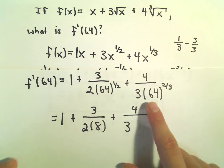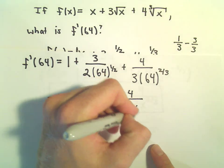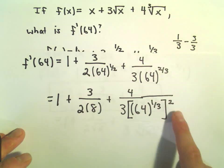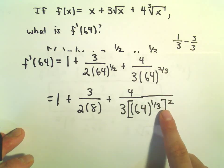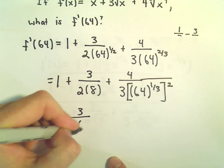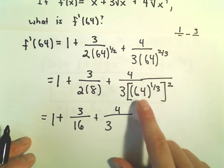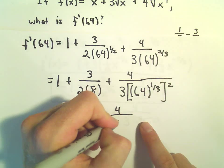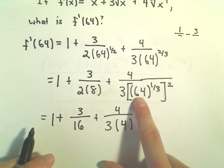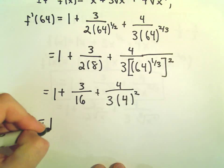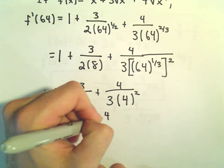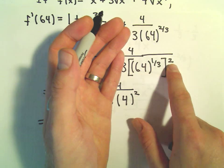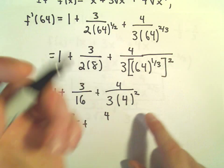Sometimes people get stuck evaluating 64 to the 2 thirds. We can rewrite 64 to the 2 thirds as 64 to the 1 third, all squared — because when you put it in parentheses the exponents get multiplied. So this gives us 3 over 16 plus 4 over 3 times — the cube root of 64 is 4, since 4 times 4 times 4 equals 64. That result is then squared, giving us 4 squared, which is 16, in the denominator. So we have 4 over 16 reducing to 1 over 4, leaving 1 over 12.